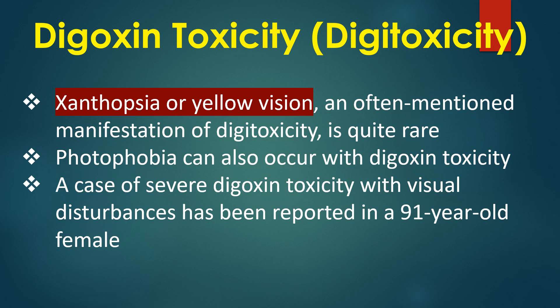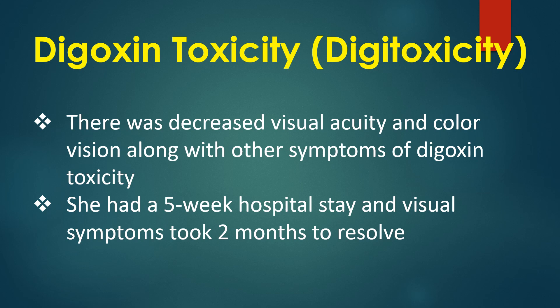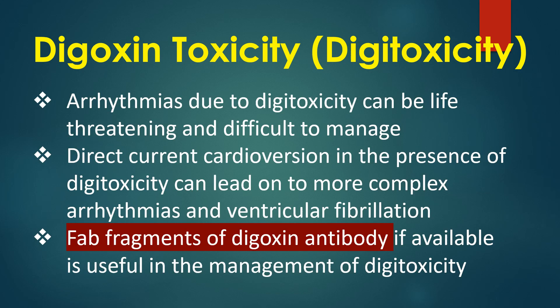A case of severe digoxin toxicity with visual disturbances was reported recently in a 91-year-old female, with decreased visual acuity and colour vision along with other symptoms. She had a 5-week hospital stay and visual symptoms took 2 months to resolve. Arrhythmias due to digoxin toxicity can be life-threatening and difficult to manage. Direct current cardioversion in the presence of digitalis toxicity can lead to more complex arrhythmias and ventricular fibrillation. FAB fragments of digoxin antibody, if available, are useful in management.